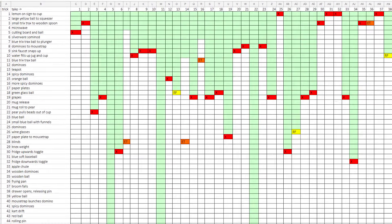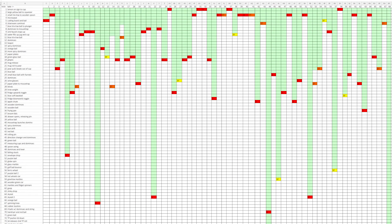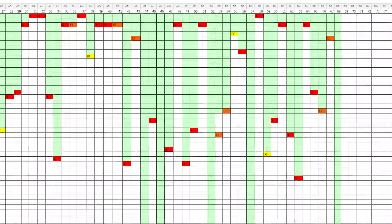You can see on this chart with successes in green and fails in red that after many adjustments, the failures of the machine became more spread out and random. And by take 68, it happened.